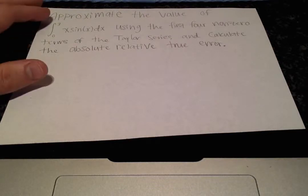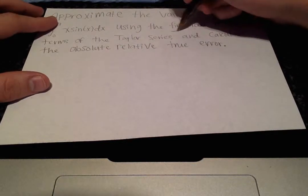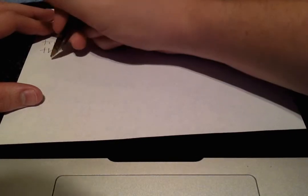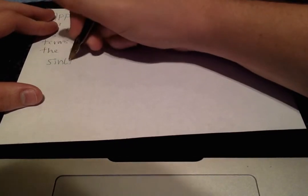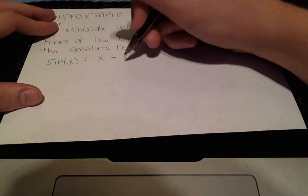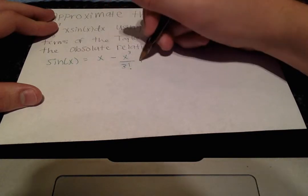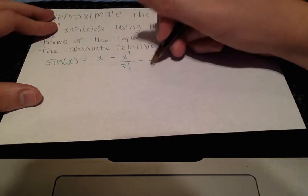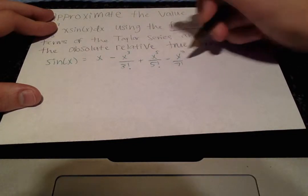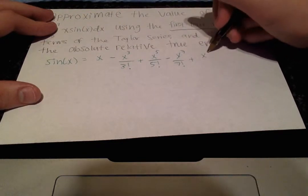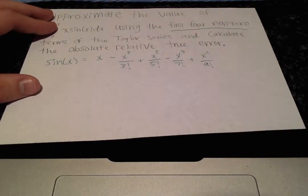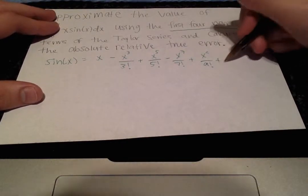So the first step is to expand the Taylor series of sin of x, which is x minus x cubed over 3 factorial plus x to the fifth over 5 factorial minus x to the seventh over 7 factorial plus x to the ninth over 9 factorial, and so on.